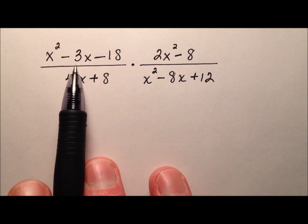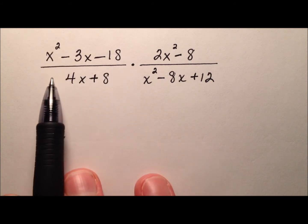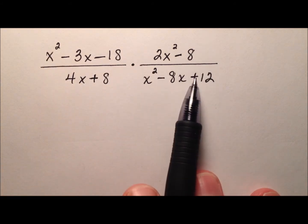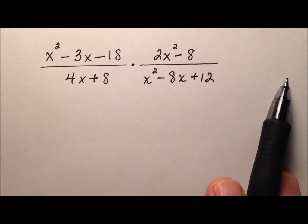In order to multiply rational expressions, I'm first going to factor everything as much as possible, cancel out any common factors top and bottom, and then multiply straight across.